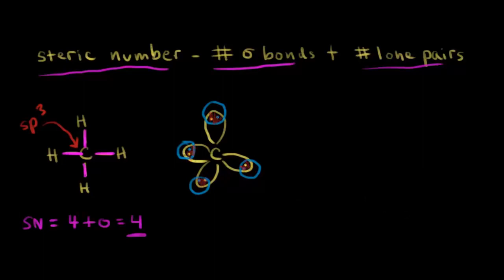Now that we have this picture of the methane molecule, we can think about these electron pairs. These electron pairs are going to repel each other — like charges repel. The idea of VSEPR theory tells us these electron pairs are going to repel and try to get as far away from each other as they possibly can in space. That means the arrangement of those electron pairs ends up being tetrahedral.